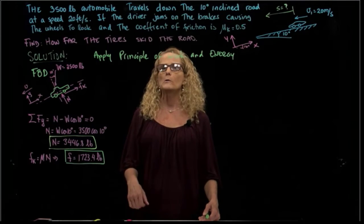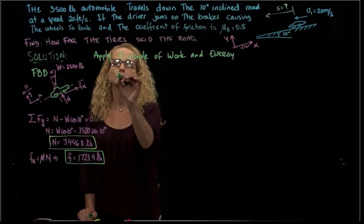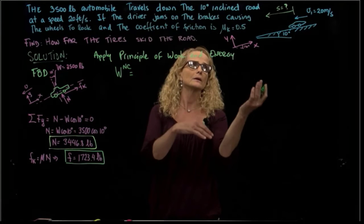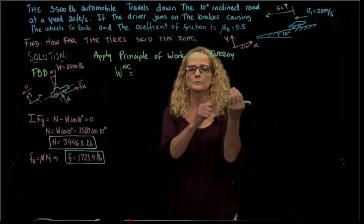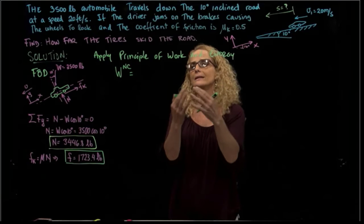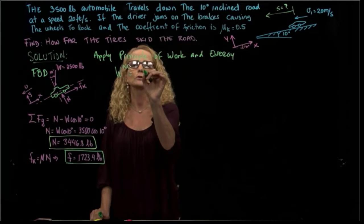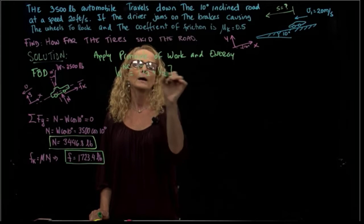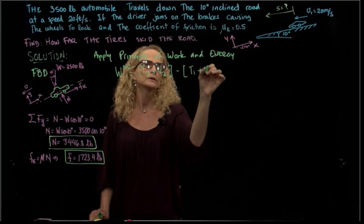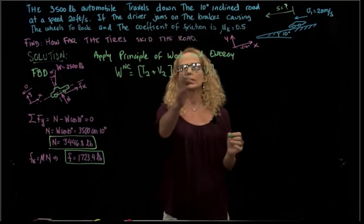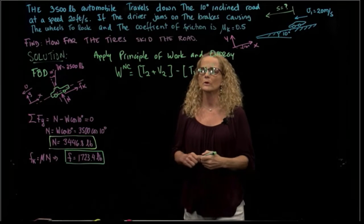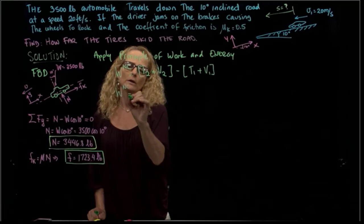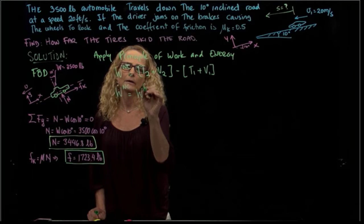What is the principle of work and energy? We know that the work done by non-conservative forces equals the total energy in the second position minus the total energy in the first position. So the energy that was lost from the first position to the second position. That will be kinetic energy plus potential energy minus kinetic energy plus potential energy. Let's calculate one of each of those terms one by one.